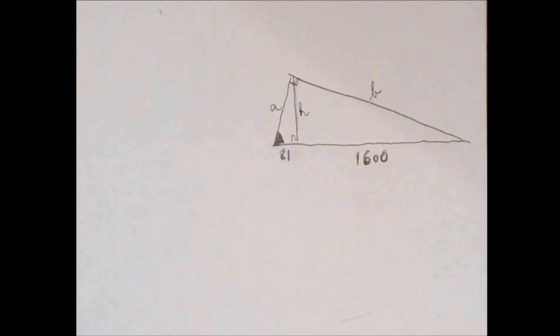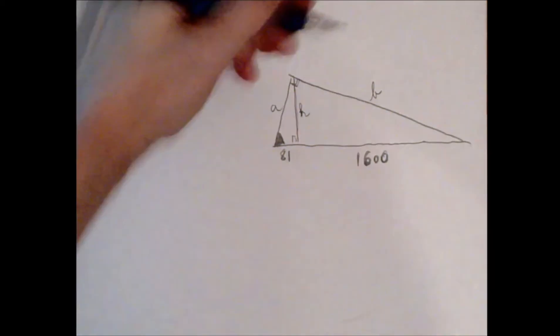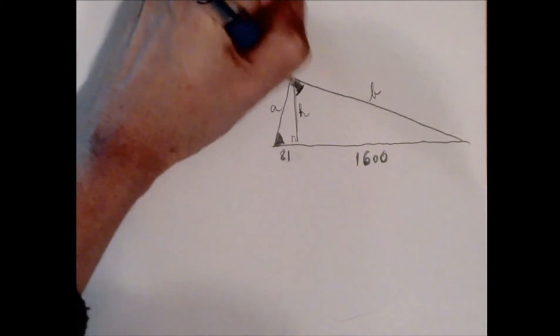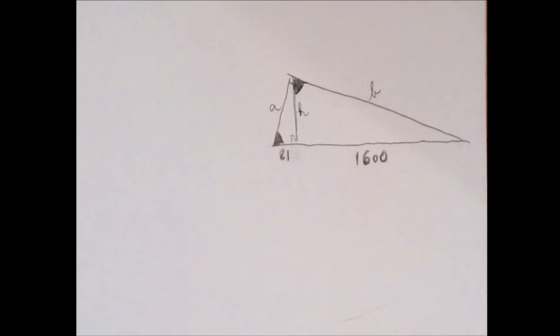In short, the altitude drawn to the hypotenuse splits the triangle into two triangles similar to each other and to the original triangle. I'm going to darken the bigger non-right angle. So we have three similar right triangles.